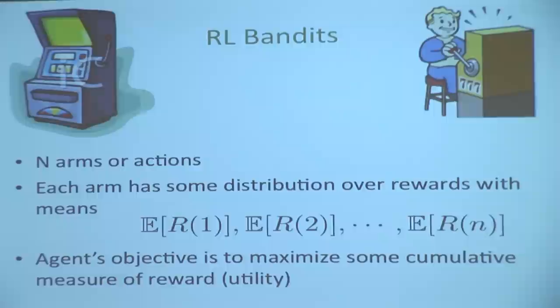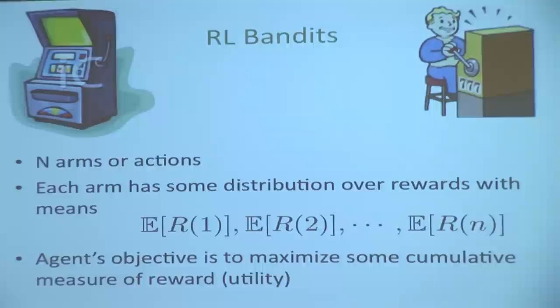Now you have this setting: you have N arms or N actions. Each arm has some known or unknown true expected reward — E[R_1] is the expected reward from action 1, E[R_2] from action 2, and so on. The agent's objective is to maximize utility, say the summed reward over time.